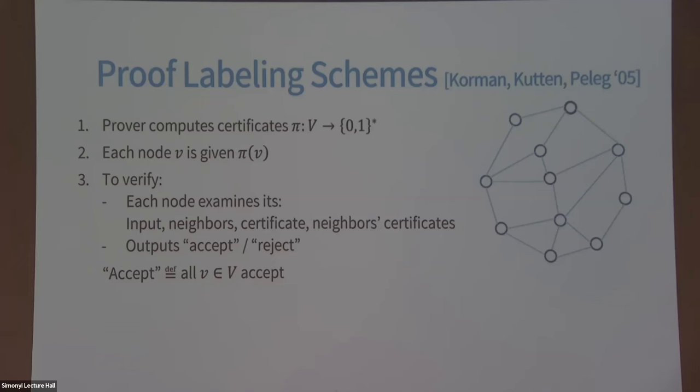There is communication implicitly, because you have to get the certificates from your neighbors — they have to send you their certificates. But for three-colorability it's a great example: the prover tells every node its color — a number from one to three — and every node looks at the neighbor's colors and makes sure they're all different from its own. If they are, it accepts; if not, it rejects. The network is colored properly if and only if all nodes accept.